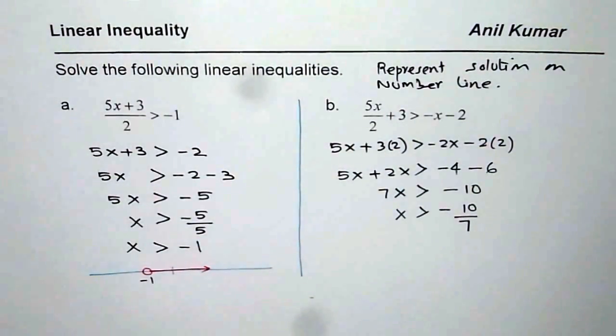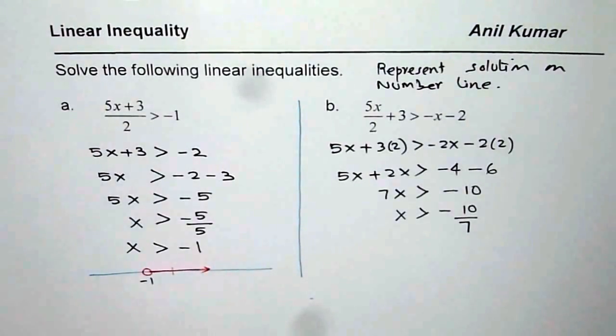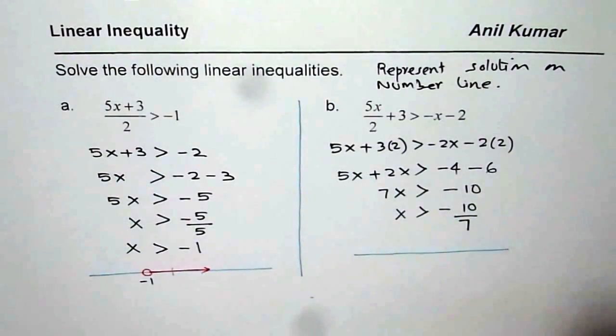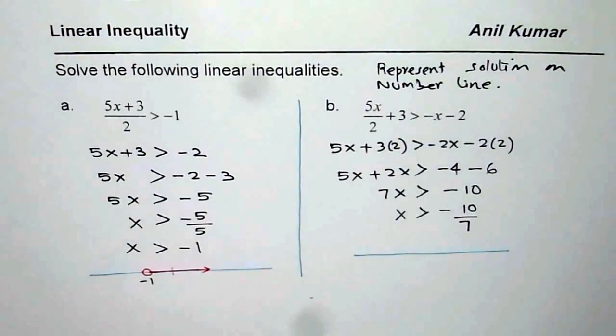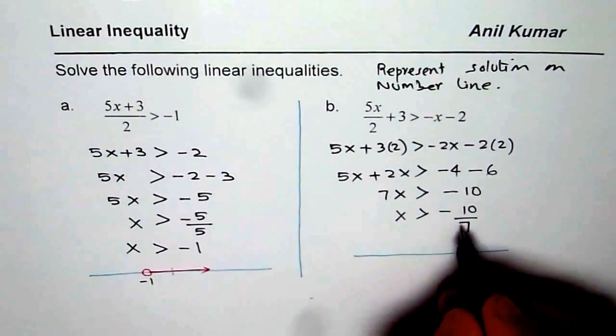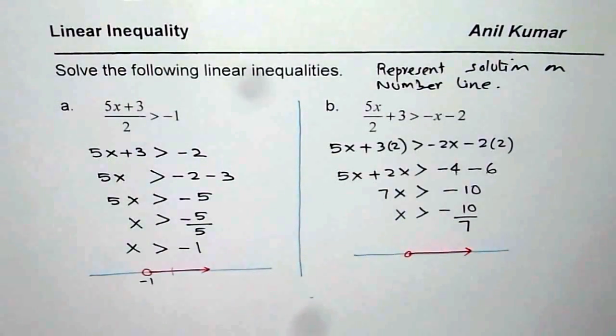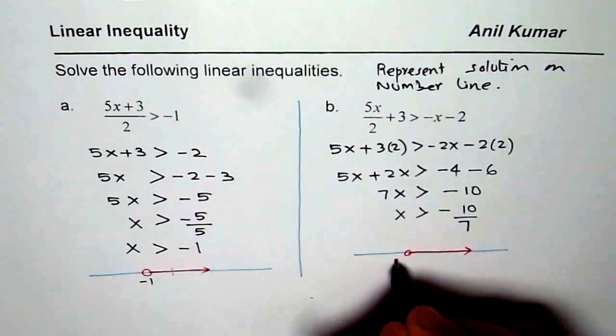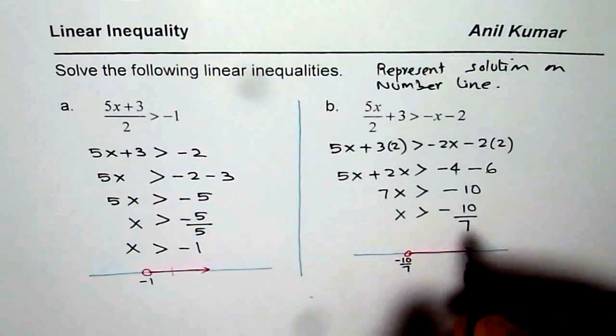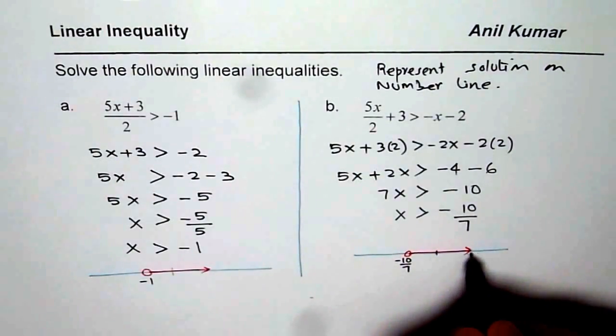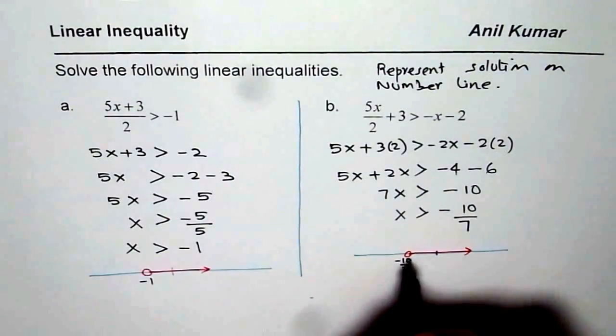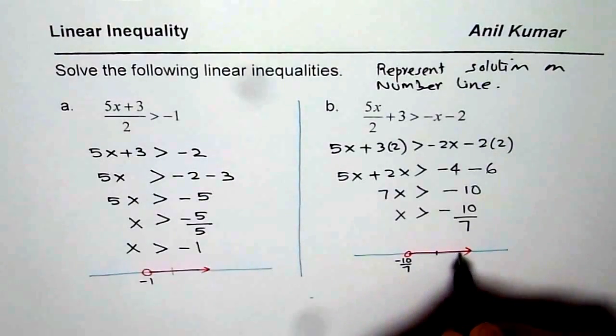Now we can again represent our solution on a number line. Let us say this is the number line. In this case also we get greater than minus 10. So let us say that is the point. This point for us is minus 10 by 7. So somewhere here we will have a 0, but it is going towards the right side. So that is how you can represent it on a number line.